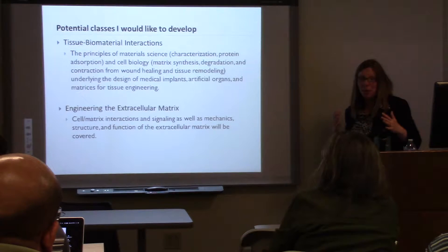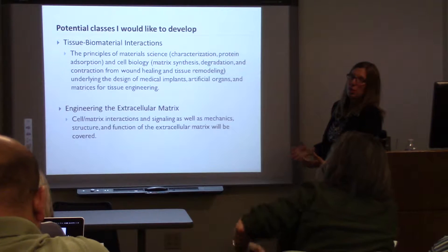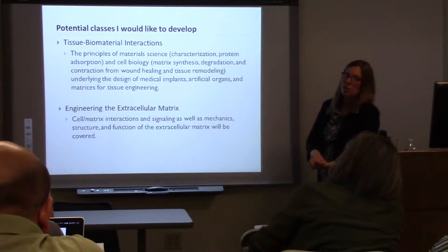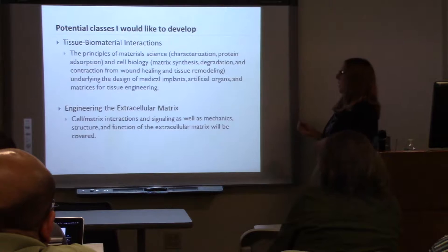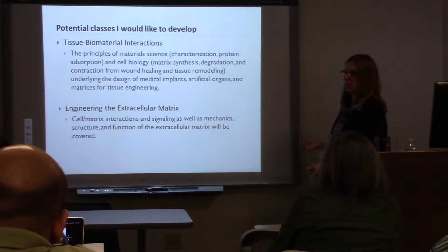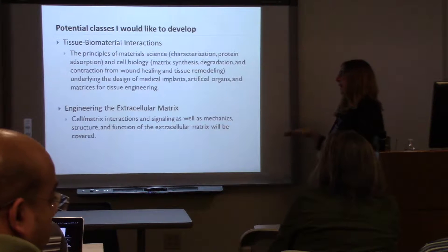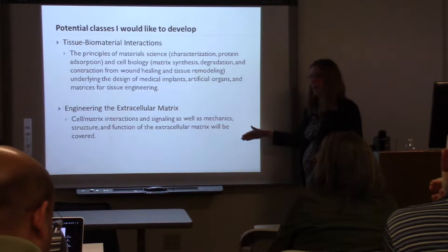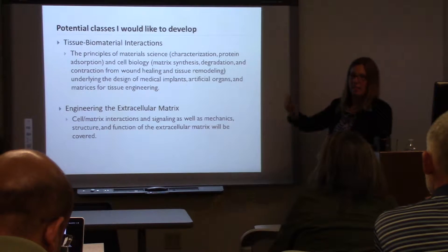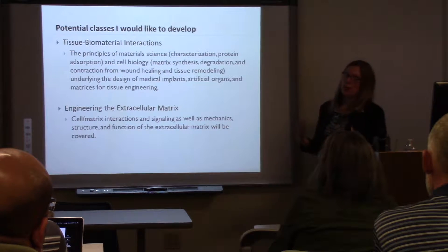I thought of maybe three courses that I could develop. One would be a tissue-biomaterial interaction class, where you'd actually talk about characterization and protein absorption on the material, then how the cell biology interacts with that — how it synthesizes the matrix, degrades the material, how wound healing and tissue remodeling affect the dynamics of the biomaterial-tissue interface — and then really focus on how you use those criteria and mechanisms to design medical implants or organs and matrices for tissue engineering. A flip version of this course would look at the extracellular matrix, examining its mechanics, structure, and function, and then how you use that to create different materials and control cell-matrix interaction.